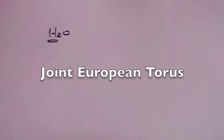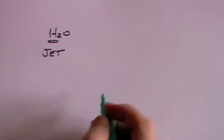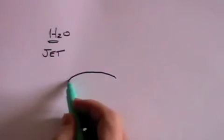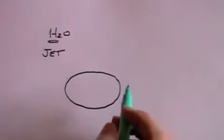In Europe there is a scheme called the Joint European Taurus, J-E-T. And that uses a torus. A torus is essentially a doughnut shape. So what they do is they get the plasma in a kind of doughnut shape.